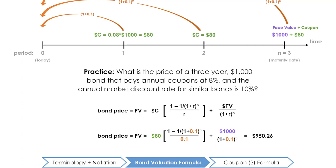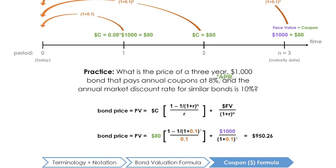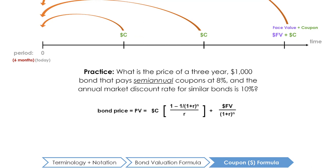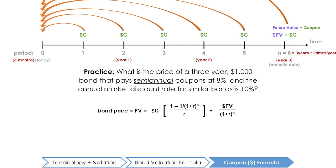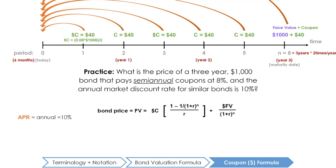Recall that coupons can be paid at any fixed intervals of time — monthly, semi-annually, annually, etc. However, the coupon rate is always expressed annually, or as an APR. Imagine that our three-year $1,000 bond with an annual market discount rate of 10% now pays semi-annual coupons at 8%. What does this mean? Firstly, if the coupons are paid semi-annually, the issuer must make two payments a year for three years, for a total of six coupon payments. Since the coupon rate is expressed annually, the issuer still pays $80 of coupons per year, but instead of $80 at the end of every year, the coupons will be broken into semi-annual installments of $40 each.